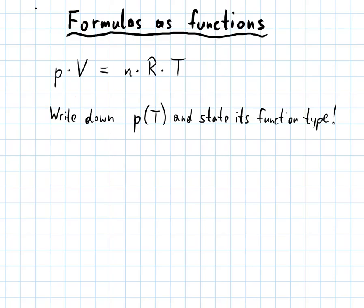So P stands for the pressure, V is the volume, N is the amount of the gas, R is a constant and T is the temperature.